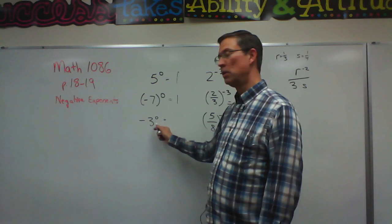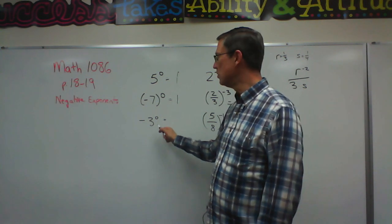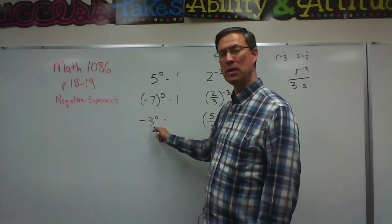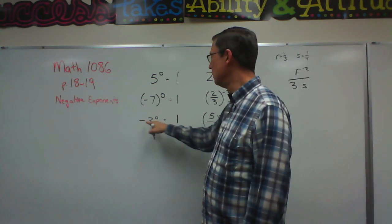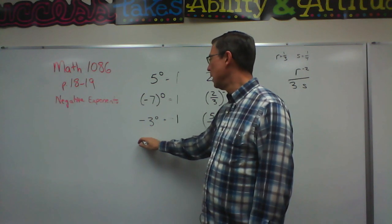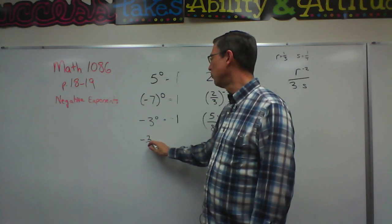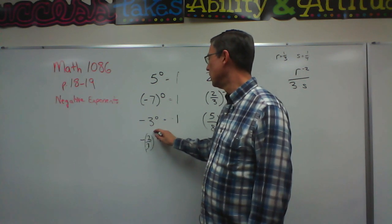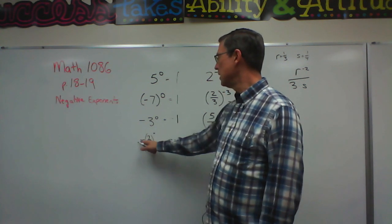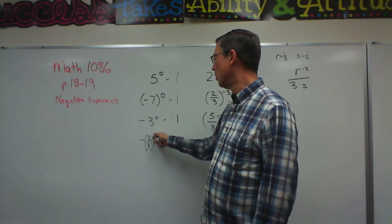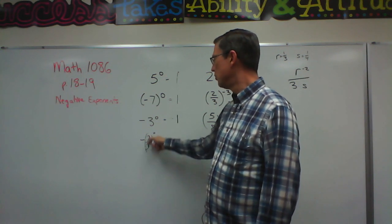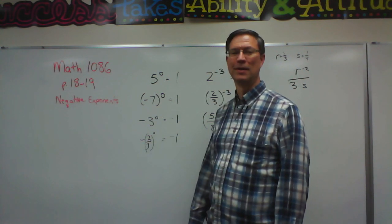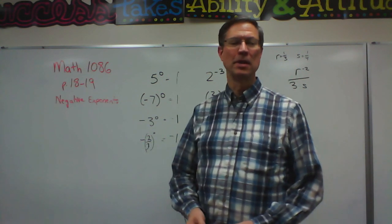Negative three to the zero power, and this is a little different because the zero is really only attached to the three. So that becomes one, but we still have the negative. Let's do a fraction. Negative two-thirds to the zero power. So the two-thirds would become one, and the negative out front would kick in. Like I said, that's not too hard.